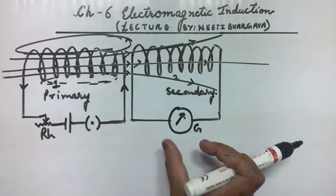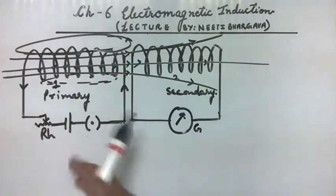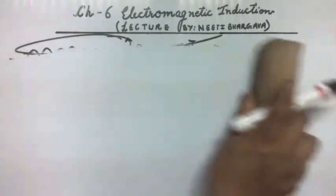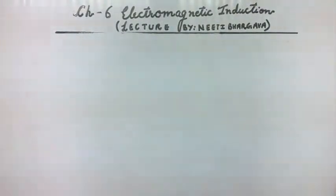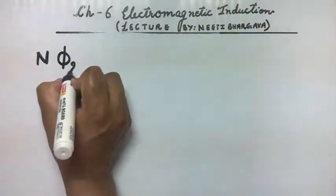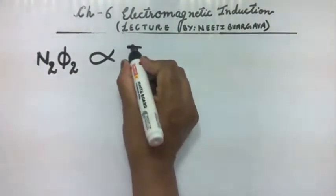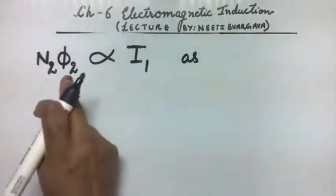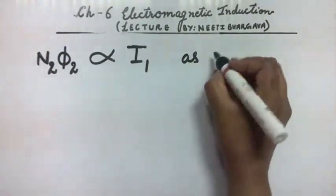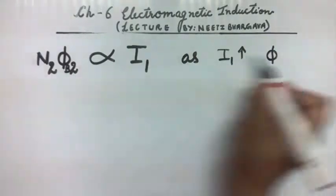This can also happen in reverse: if coil 2 is connected to a battery and the galvanometer is connected to coil 1, then EMF can be induced in coil 1 because of coil 2. The flux linkage in coil 2 — that is N·phi₂ — is directly proportional to current I₁. As current increases in coil 1, the magnetic flux in coil 2 will also increase.